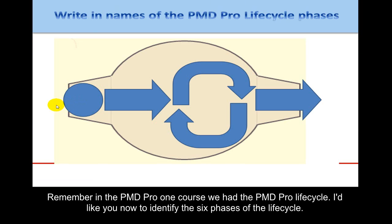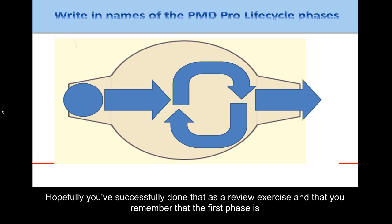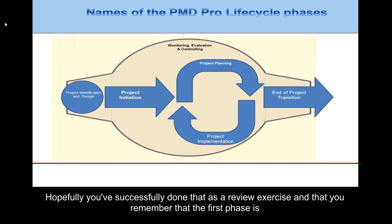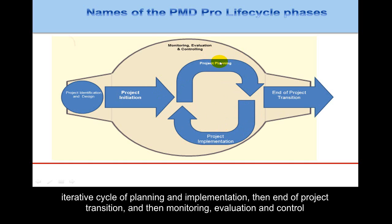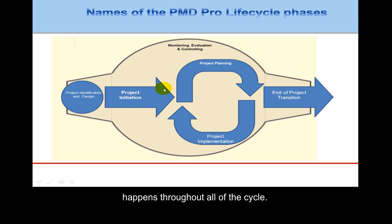Remember in the PMD Pro 1 course we had the PMD Pro lifecycle. I'd like you to identify the six phases. The first phase is project identification and design, then project initiation, going into project planning, and this iterative cycle of planning and implementation, then end of project transition — and monitoring, evaluation, and control happens throughout all of the cycles.